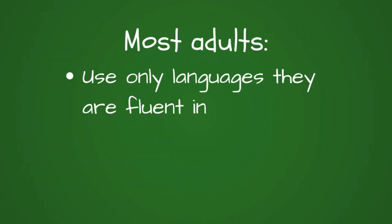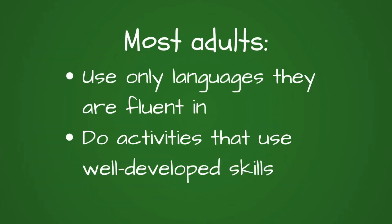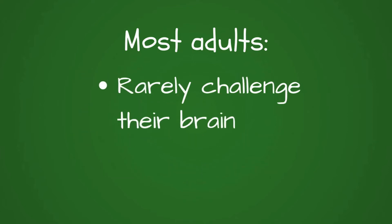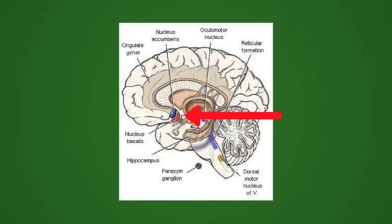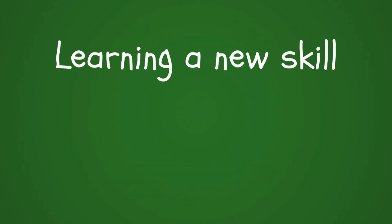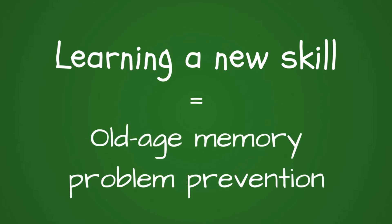Most adults spend their time using languages they are fluent in and doing activities that require skills they are already familiar with. They rarely do things that challenge the brain, which would activate the nucleus basalis. Merzenich believes that learning a new skill, like a new language or physical activity, can help prevent or at least delay the onset of old age memory problems.